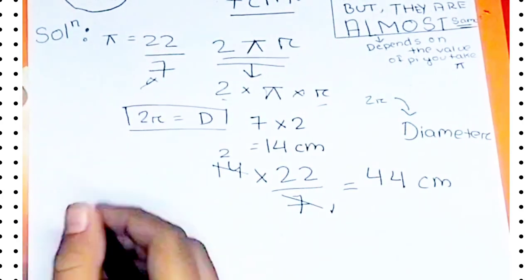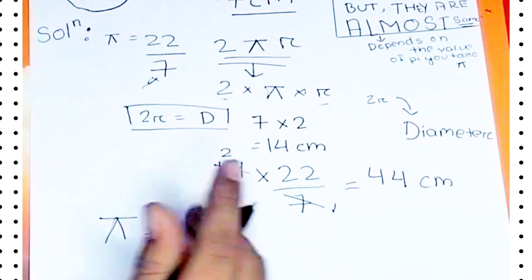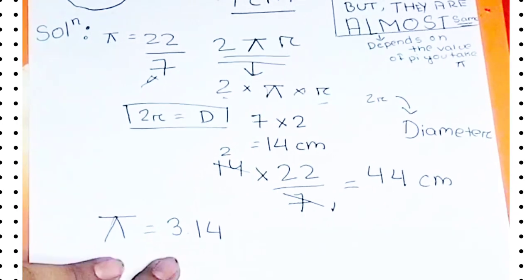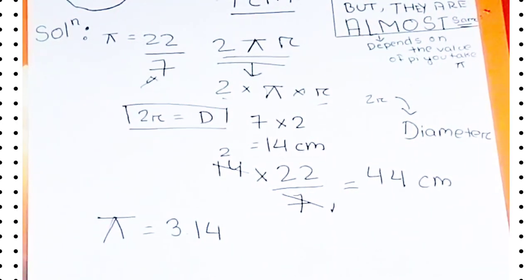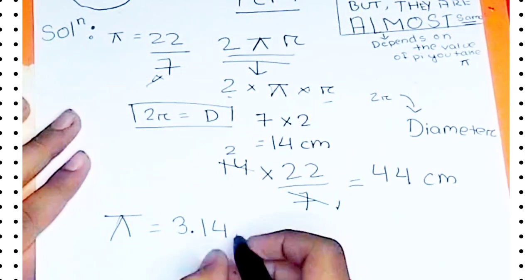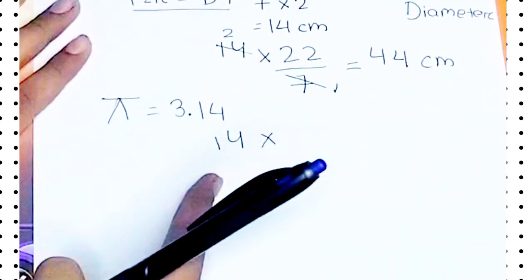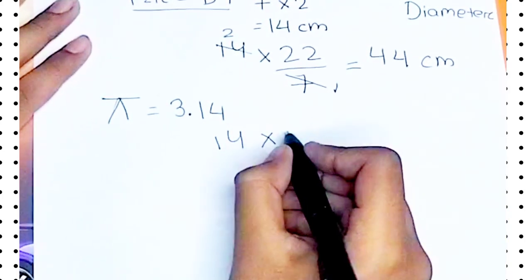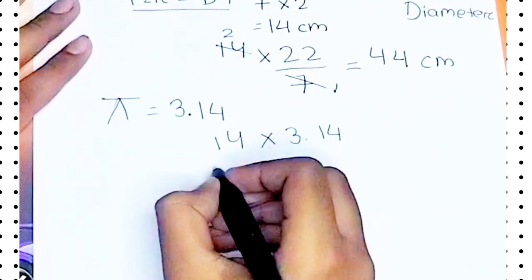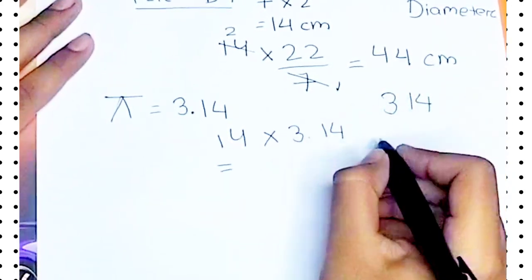Now 44 centimeters is not the exact value. If we take pi's value as 3.14, it's a bit more exact value. Then if we apply the same formula, our diameter 14 centimeters multiplied by 3.14, what will be the result? I am doing your multiplication also for you.